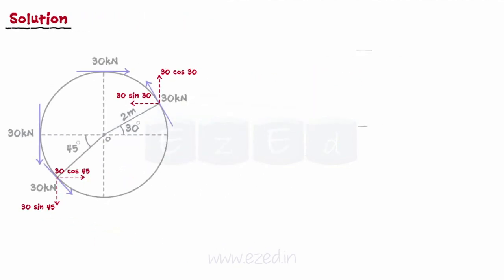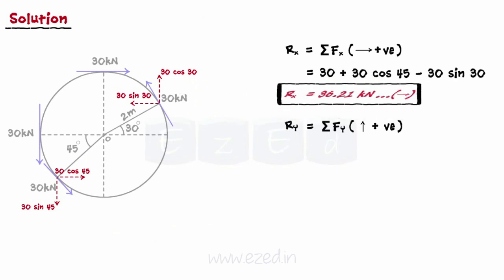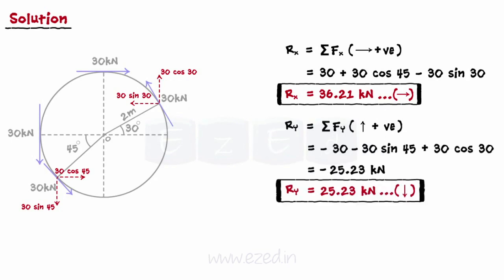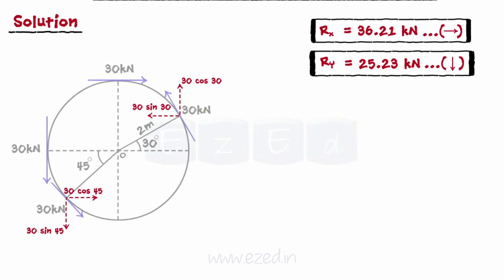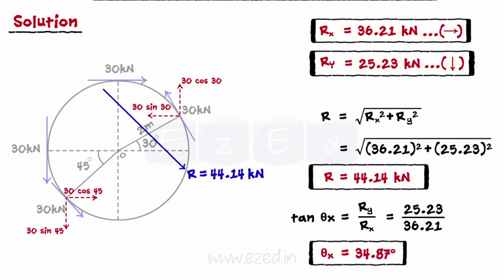We will first resolve all the inclined forces into components along the x-axis and y-axis respectively. After that, we find the summation of the forces along the horizontal and vertical axis respectively, that is, the horizontal and the vertical component of the resultant. Then we can find the magnitude of the resultant using this formula, and then easily find the inclination theta of the resultant with the horizontal axis.